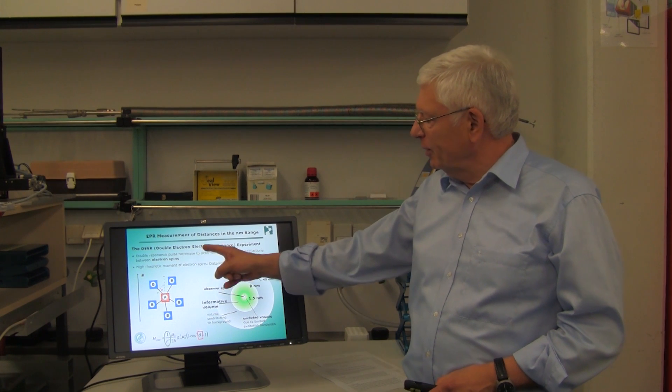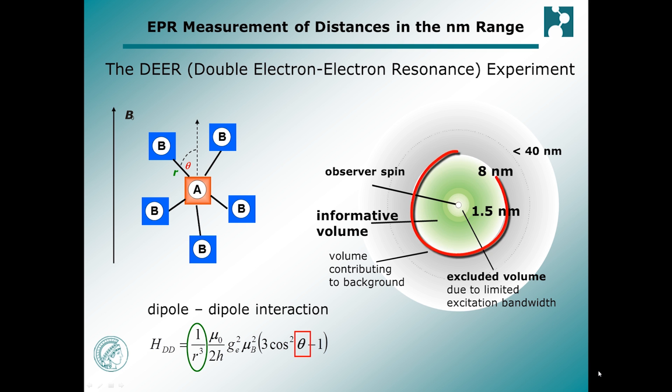What is DEER? DEER stands for Double Electron-Electron Resonance, a method that measures dipole-dipole interactions between electron spins. From this we can determine distances in the range of 1.5 to 8 nanometers.